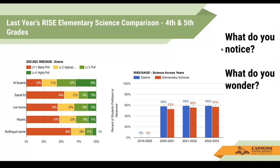Let's look at what we see in the data. On the right graph, the blue represents all schools in the district — elementary, middle, and high schools — and the red is just the elementary schools. We didn't take the RISE test in 2019-20 because that was the COVID year and we did not administer the test, so we have no data for that. You can see that our elementary schools are slightly below the average for our middle and high schools.